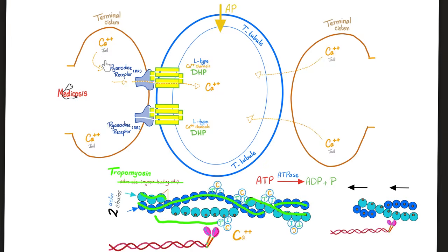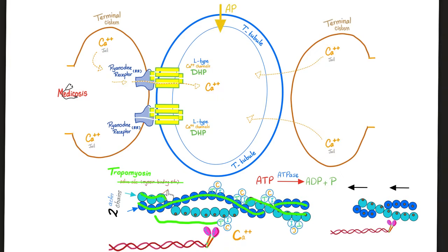Action potential comes, releases calcium from the jail through the ryanodine receptor, then the dihydropyridine receptor. Calcium is inside the T-tubule, finds troponin C, troponin T binds tropomyosin and removes it from the active site of actin. The active site is now exposed. Myosin extends its cross bridges, binds the active site. We need ATP and ATPase activity — release energy, pull that actin inwards, contract the muscle.